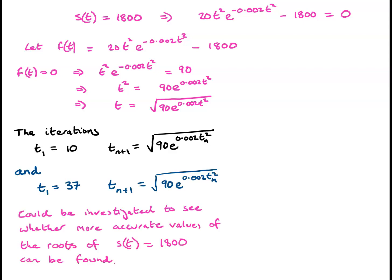We know we have solutions somewhere around t = 10 and t = 37. So we could consider the iterations: t₁ = 10, tₙ₊₁ = √(90 e to the 0.002tₙ²); and t₁ = 37, tₙ₊₁ = √(90 e to the 0.002tₙ²). We can investigate these iterations to see whether they give us more accurate values of the roots of s(t) = 1,800.